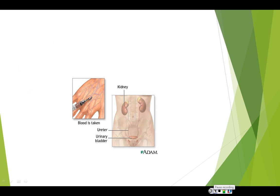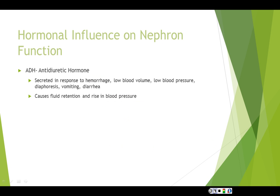Looking at the diagram, you can see the kidneys, ureters, bladder, and the urethra at the bottom. The nephron's function has a hormonal influence — it is responsible for controlling the release of antidiuretic hormone, regulated by the distal tubule. Antidiuretic hormone is released when we have lost fluid, such as during dehydration, in an attempt to maintain fluid volume.